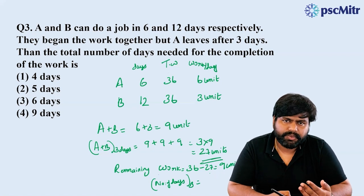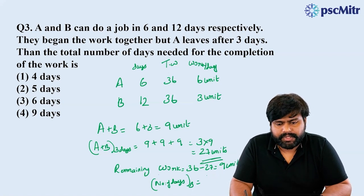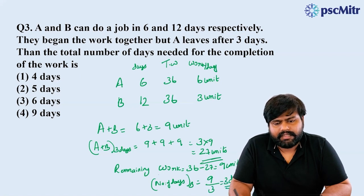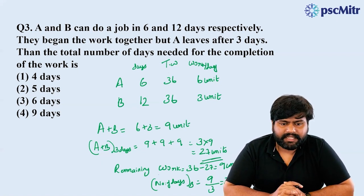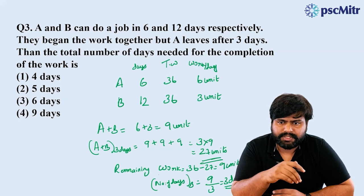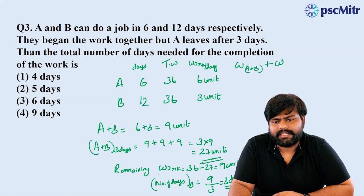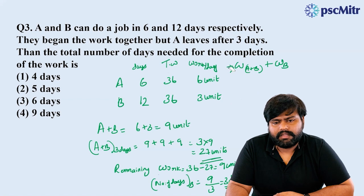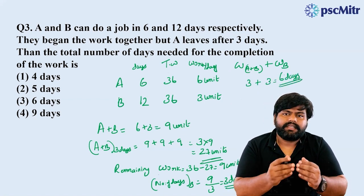3 days for B alone. So A and B together for 3 days, plus B alone for 3 days: in total 6 days, this work will be complete.